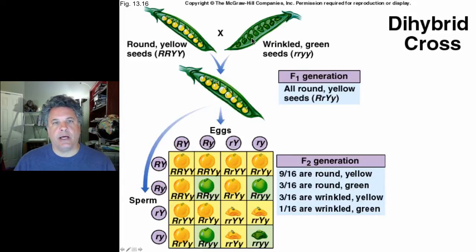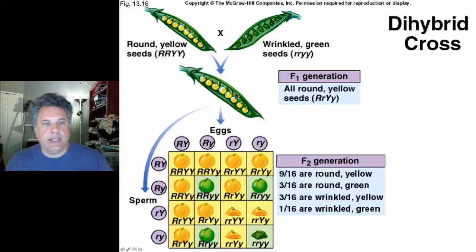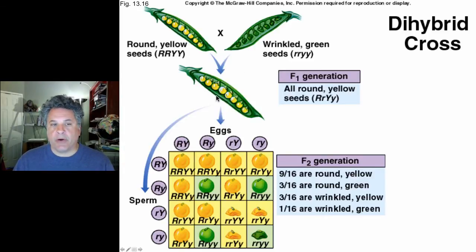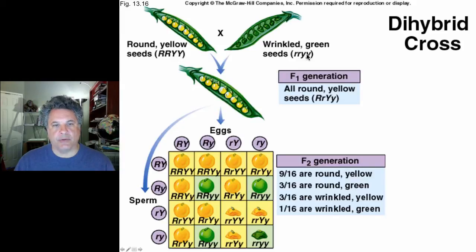We take a true-breeding plant with wrinkled and green peas and cross it with a true-breeding plant with round and yellow peas. The F1 show only one phenotype — yellow and round peas — since the round allele is dominant to wrinkled and the yellow allele is dominant to green, consistent with Mendel's monohybrid crosses.